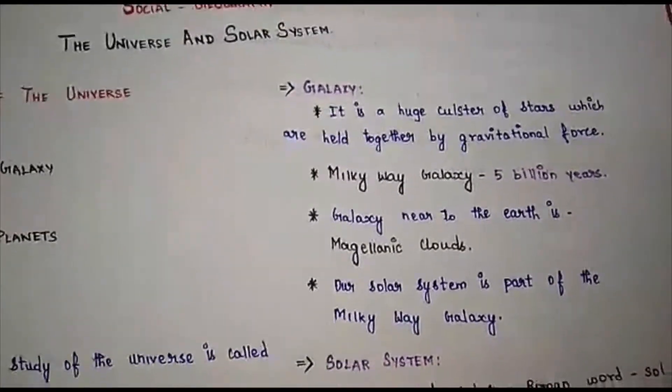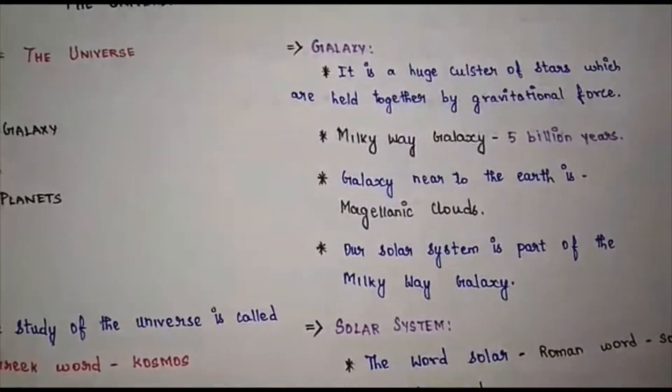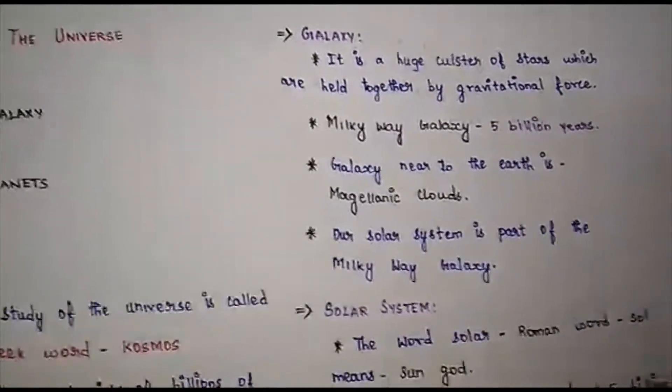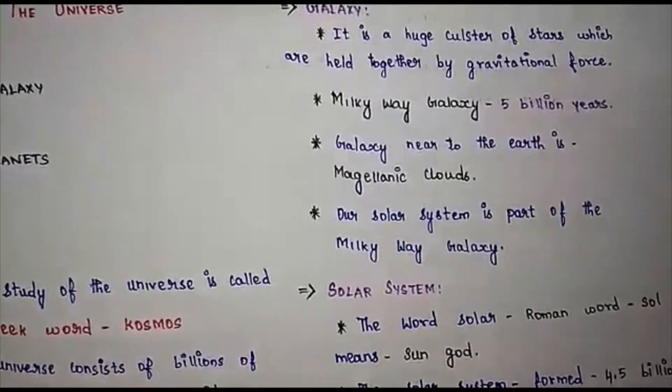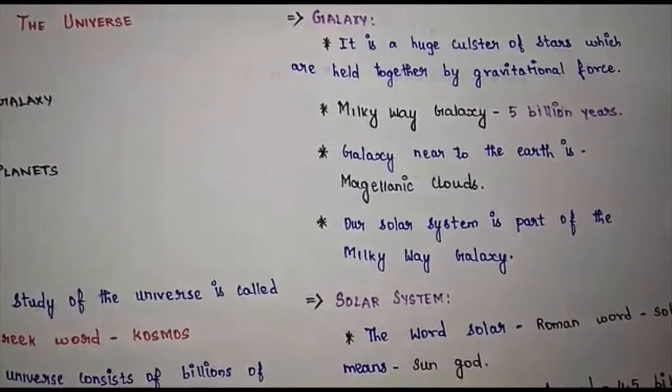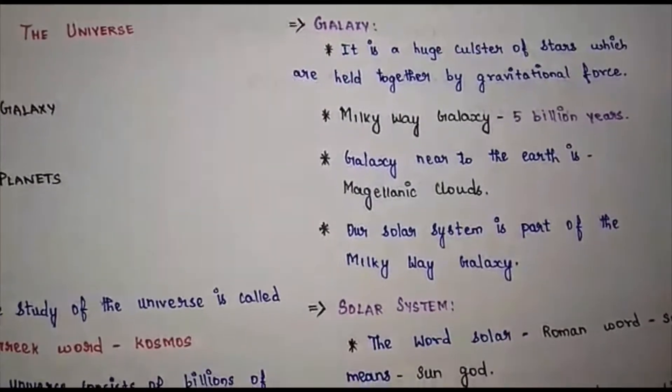Most of the galaxies are scattered in space but some remain in groups. The Milky Way Galaxy was formed about 5 billion years after the Big Bang explosion.